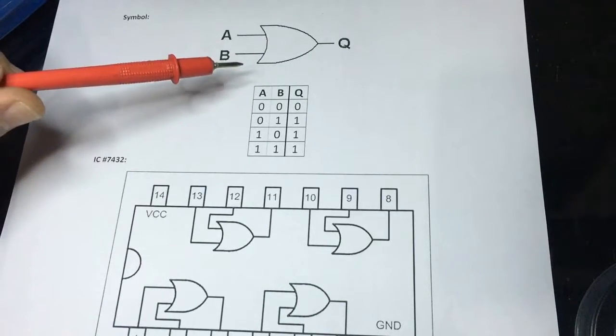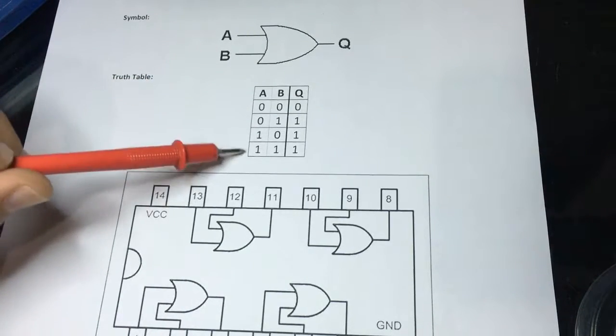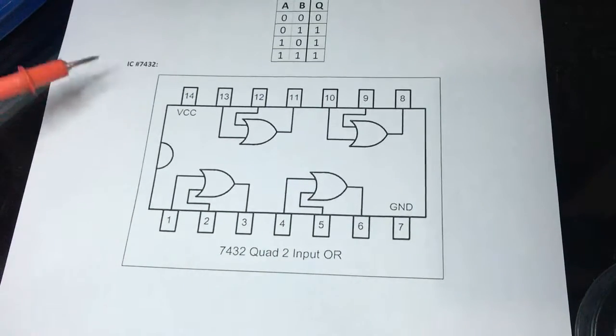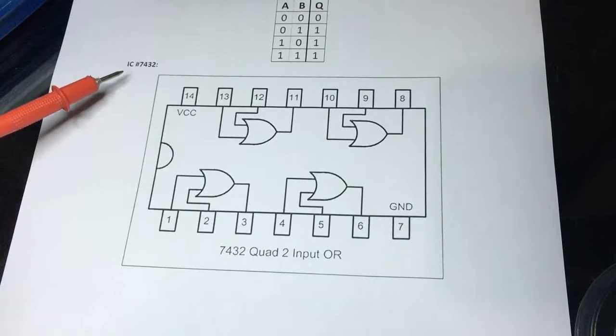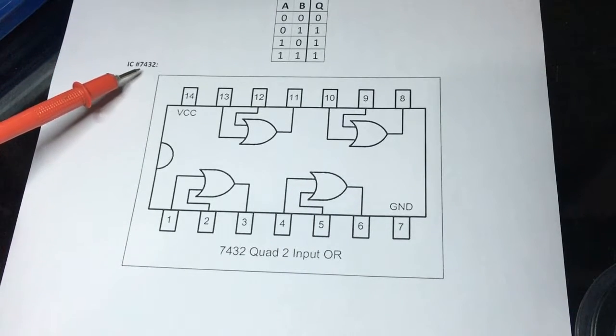As we see here by moving down below, we have the IC of the two input OR gate. It's 7432.